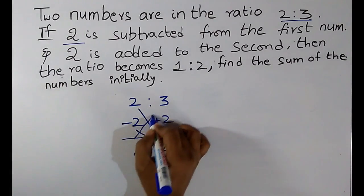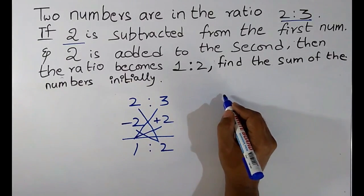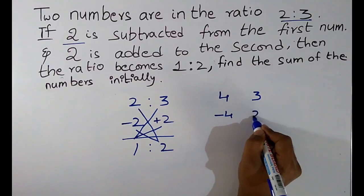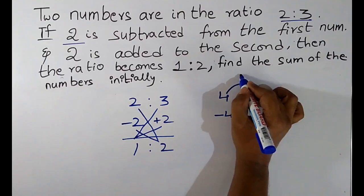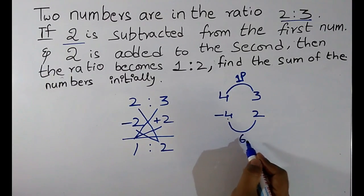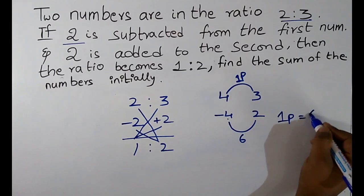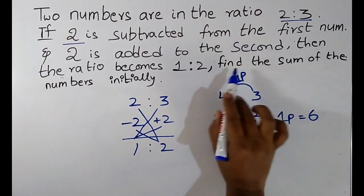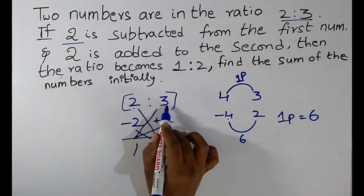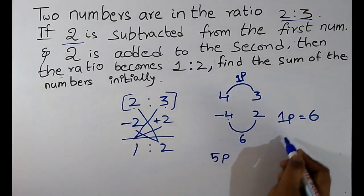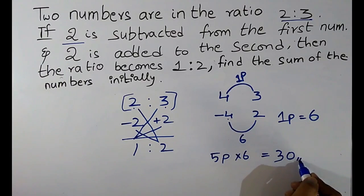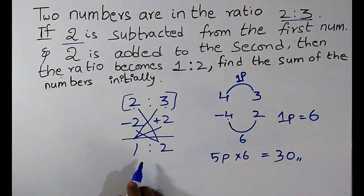Following the same format by cross multiplying: 2×2=4, 3×1=3, 2×(−2)=−4, 1×2=2. The difference of the upper numbers gives 1 part, and the difference of the lower numbers from 2 to −4 is 6. So 1 part equals 6. We have 2 parts for the first number and 3 parts for the second, totalling 5 parts. 5 × 6 = 30 is the sum of the numbers initially.